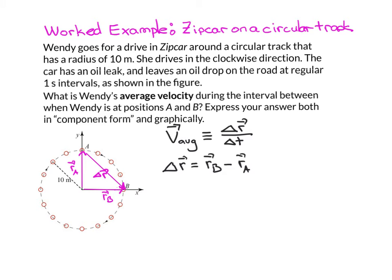RB and RA are clearly vectors of length 10 meters because that's the radius of the circle. RB points in the plus i-hat direction, so its length is 10 meters. And then I have a minus sign here, and RA, also of length 10 meters, points in the j-hat direction. So that is my expression for delta R.